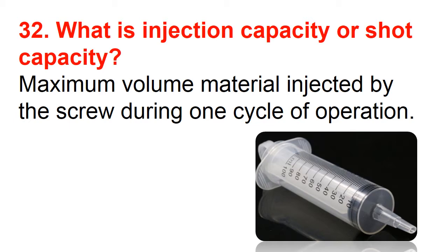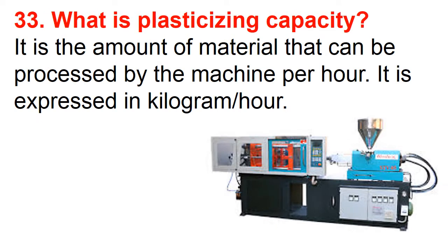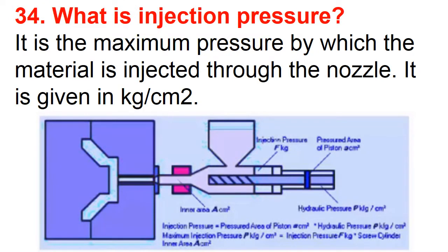Question number thirty-three: What is plasticizing capacity? It is the amount of material that can be processed by the machine per hour, expressed in kilograms per hour. Question number thirty-four: What is injection pressure? It is the maximum pressure by which material is injected through the nozzle, given in kilograms per centimeter square.